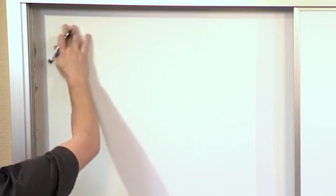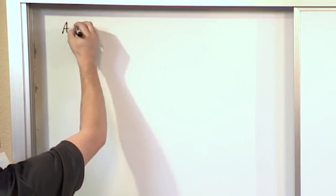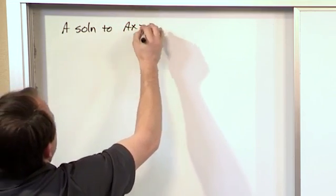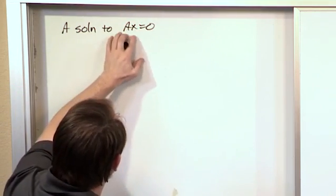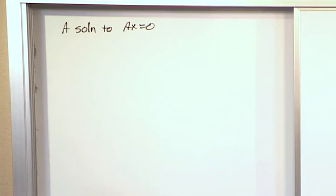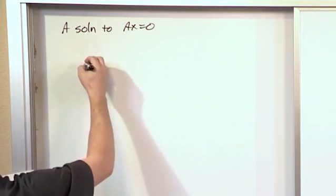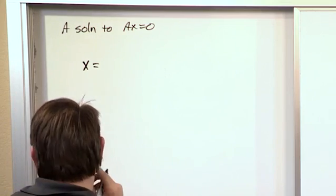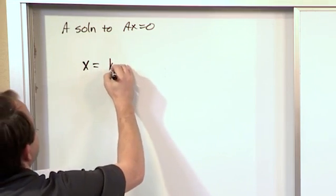One of the solutions that we got, a solution to Ax = 0 for a specific matrix, for a specific problem that we had in Volume 1 was the following. What I'm writing down now is a solution to a problem that we actually worked before.